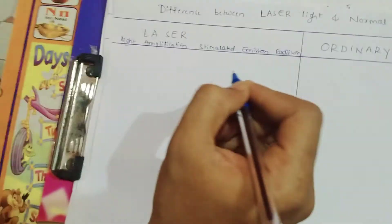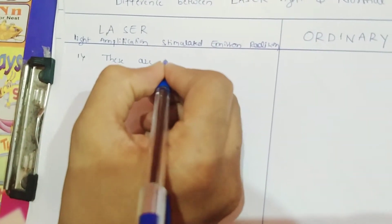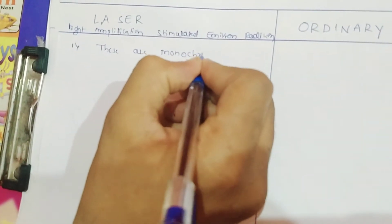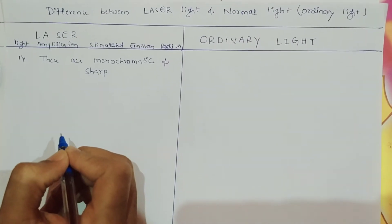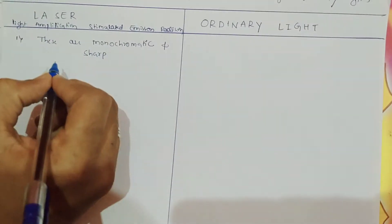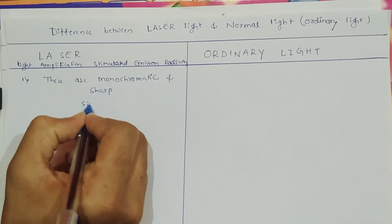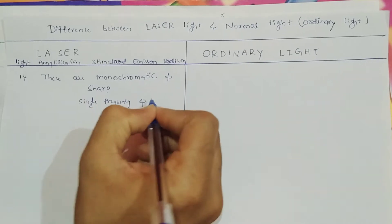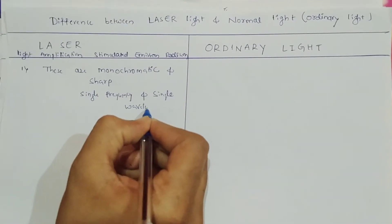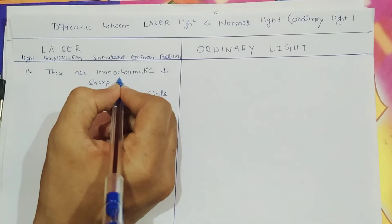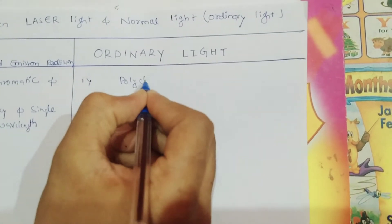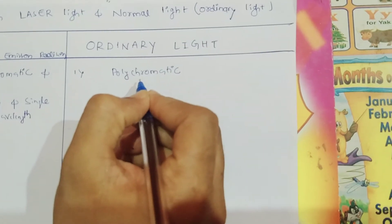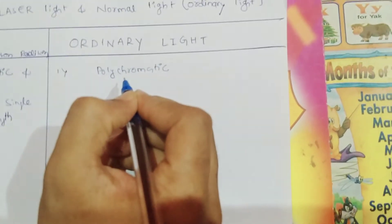Now we are going to discuss the different properties of laser light and ordinary light. The first important property of laser light is that they are monochromatic and also sharp. Monochromatic means they provide a single frequency and single wavelength. In the case of ordinary light, they are polychromatic, which means they don't have a single frequency or single wavelength, and they are not sharp.